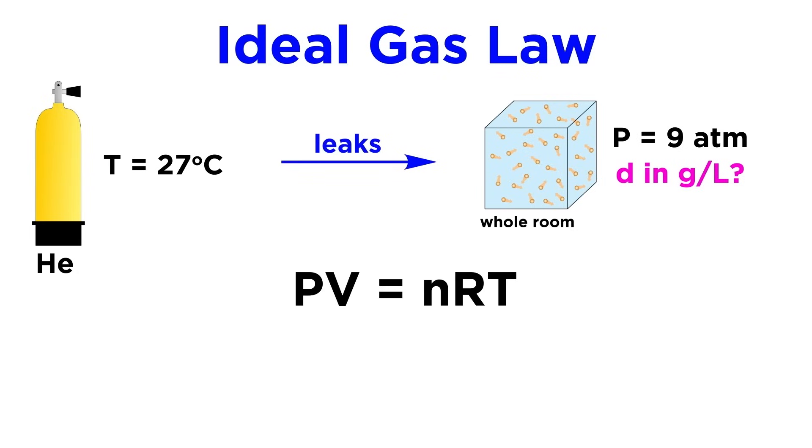Well let's look at the ideal gas law. We have pressure and temperature, but we don't have moles or volume. Well let's do some clever algebra. We know that the molar mass of a gas, represented by mm, is equal to the number of grams of gas over the number of moles of gas, hence grams per mole.